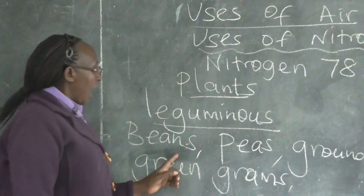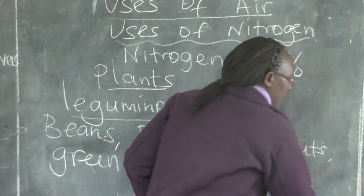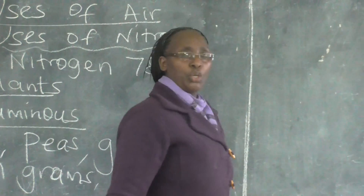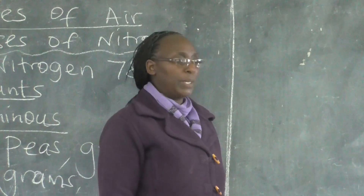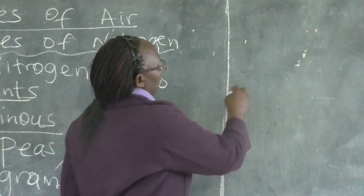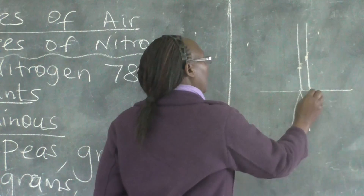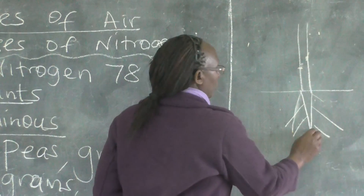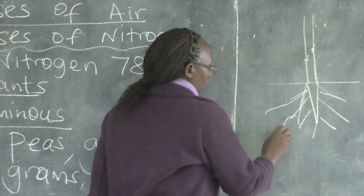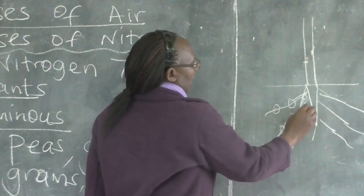The leguminous plants are very special to us human beings because they produce the protein which is needed in the body. These leguminous plants have special roots — they have special roots. This is a taproot plant. The leguminous plants have very special structures.